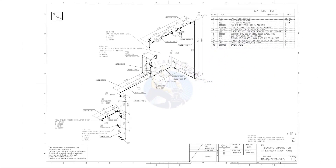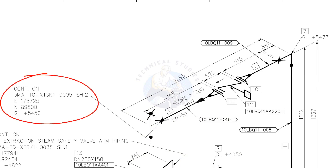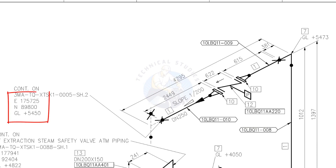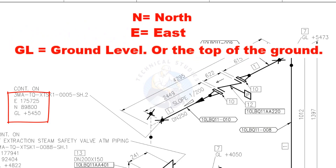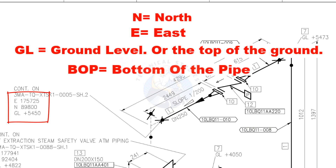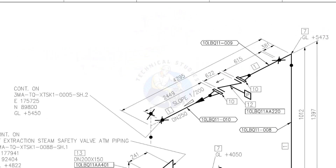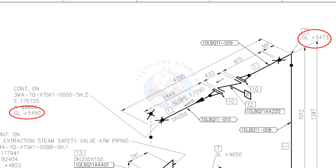Let us go to the drawing. This drawing is the continuation of the previous drawing. See the coordinates: N means north, E means east, and GL means ground level — the top of the ground. GL and BOP are the same here; BOP means bottom of pipe. D 250 means the nominal diameter of the pipe is 250, which equals 10 inch NB. Slope 1 to 200 means the pipe is sloped 1 millimeter for every 200 millimeters. For a pipe of 1000 millimeters length, that gives 5 millimeters of slope. Compare these two levels and write down the slope in the comment box.